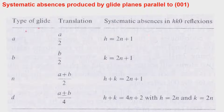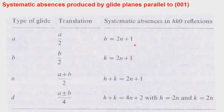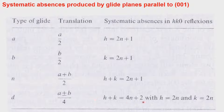In this case it is hk0, and the systematic absences are: for the A glide, h odd; for the B glide, k odd; for the N glide, h+k odd. In the case of a diamond glide, which is outside the scope of this course, there are also systematic absences. The conditions for reflections to be measurable are given here — this is also what you will see in the international tables, which list systematic presences: k even and l even only present for B and C glide respectively.